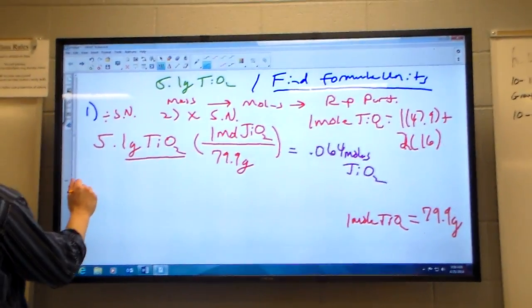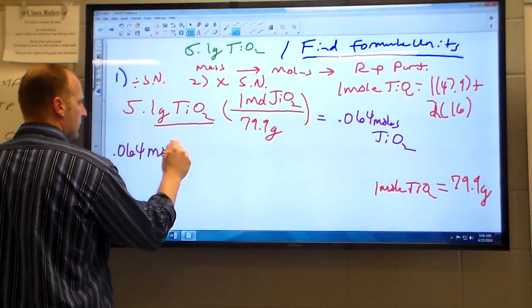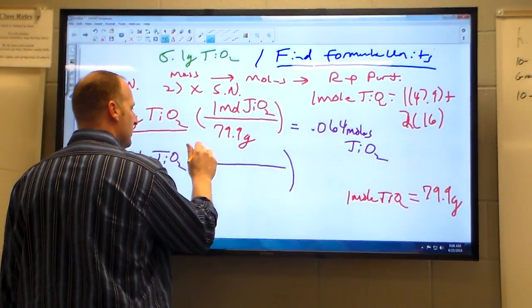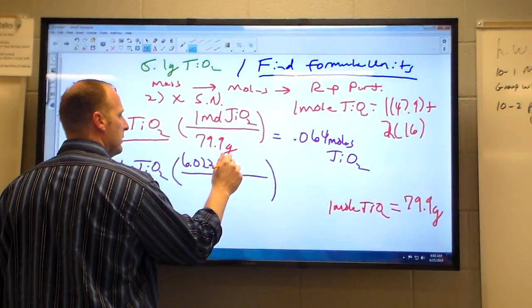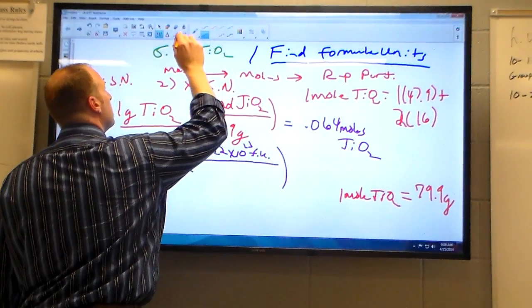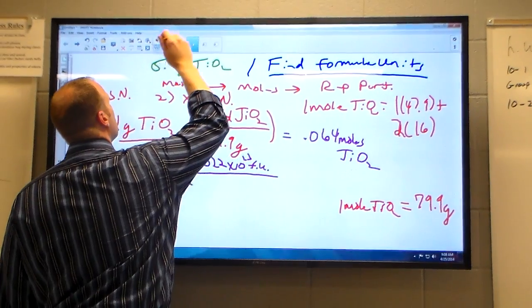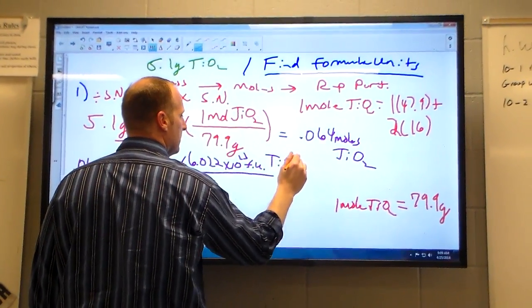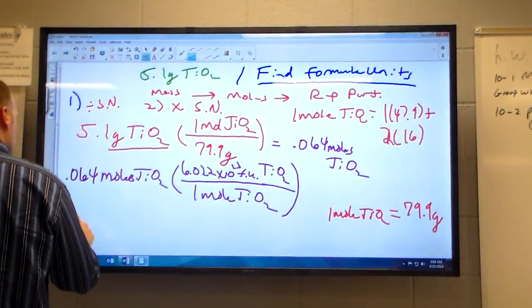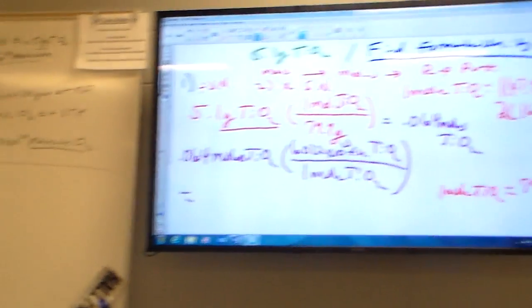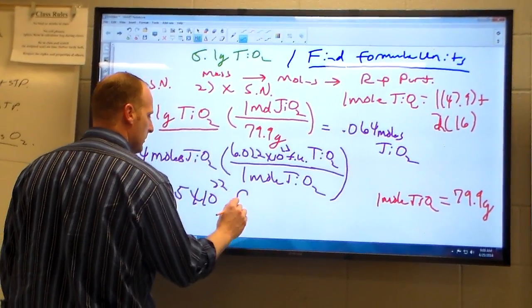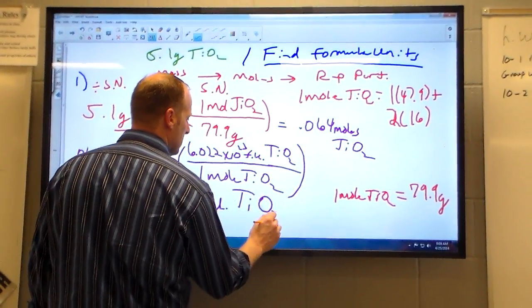Then we'll turn around and convert that to representative particles. Remember that the second step is to multiply the special number if I want to represent particles, 6.22 times 10 to the 23rd, and this will be formula units of TiO2 divided by one mole of TiO2. So, what did we get here? About 3.85 times 10 to the 22nd formula units of TiO2.